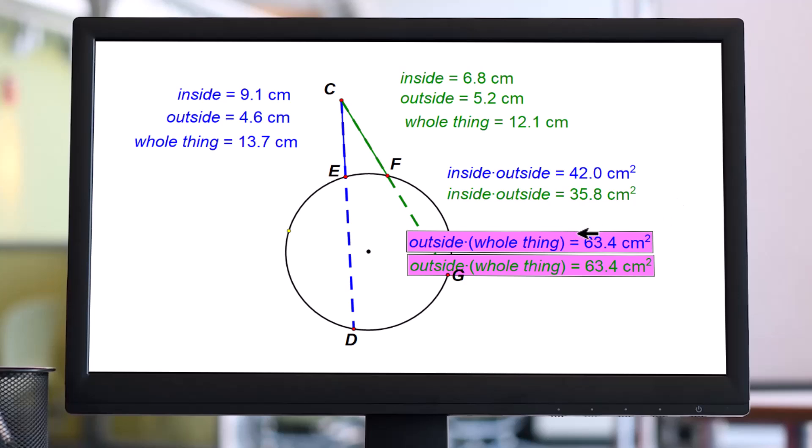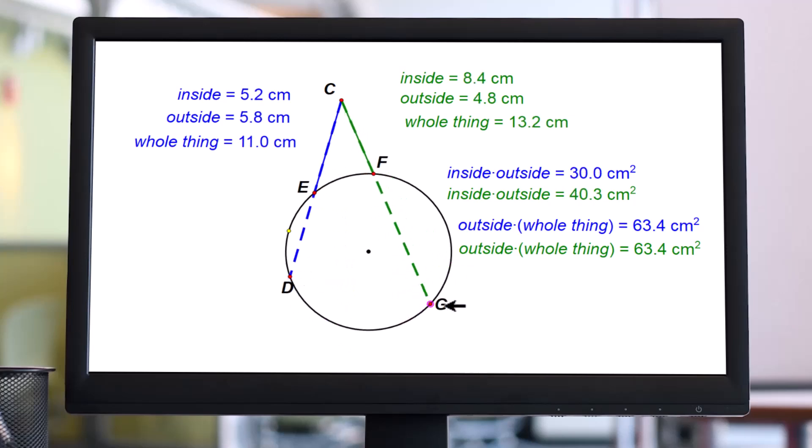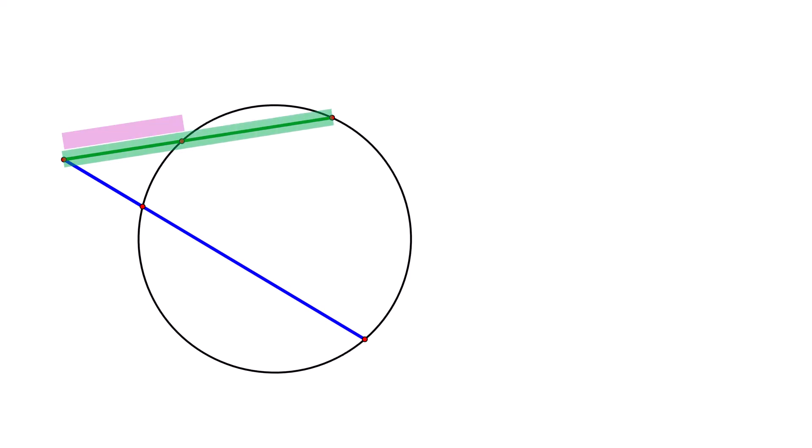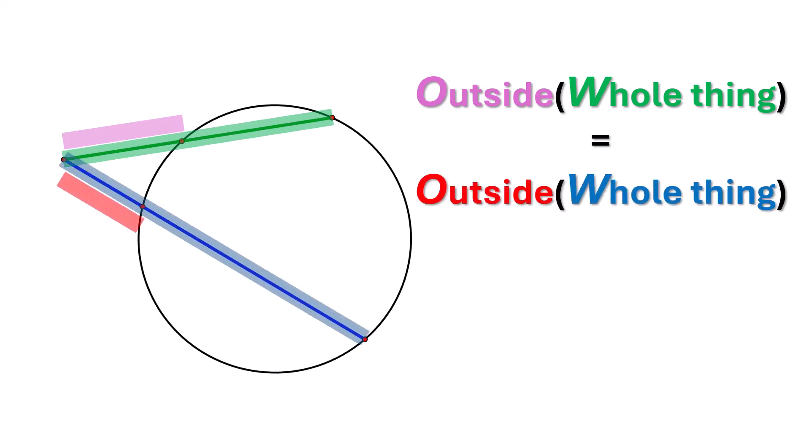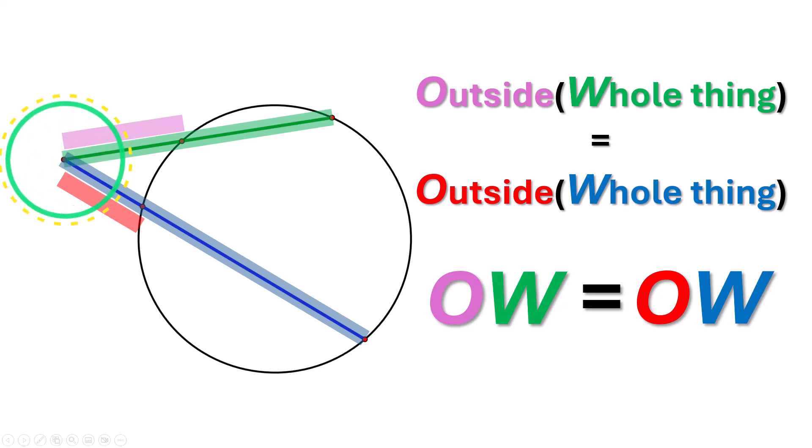What does work is this outside times whole thing. So if I take the outside number times the whole thing, these two match. Does that stay the same as I move it? No matter where I put these points, outside times whole thing stays constant. Outside times whole thing, when you take the outside times the whole thing of one of those, it's going to equal outside times whole thing of the other secant. So I call that, I taught my students ow-ow. When it's an ow-ow, it's got a pointy thing on the outside.